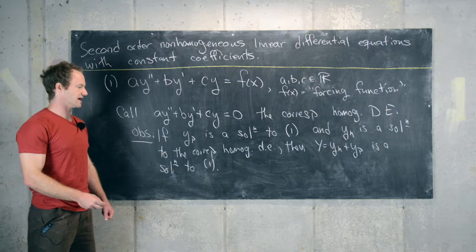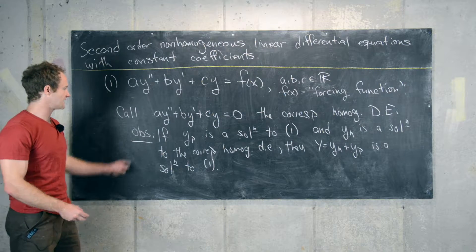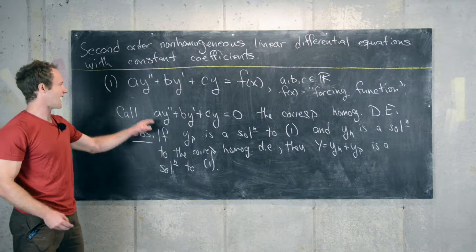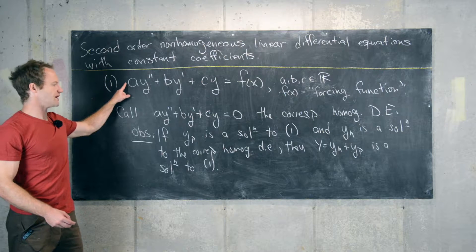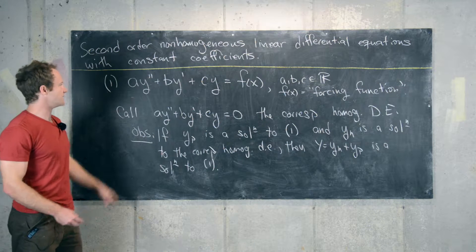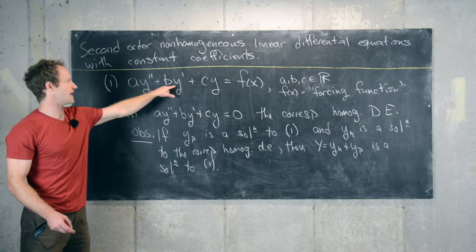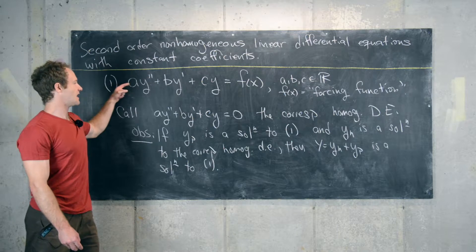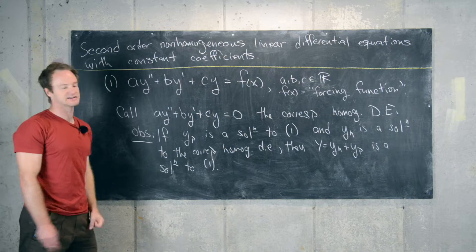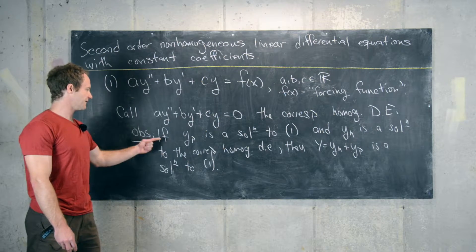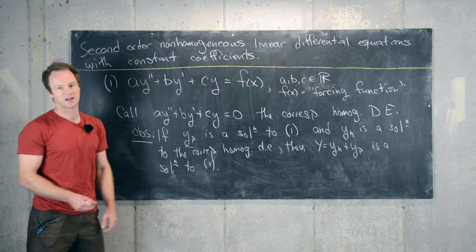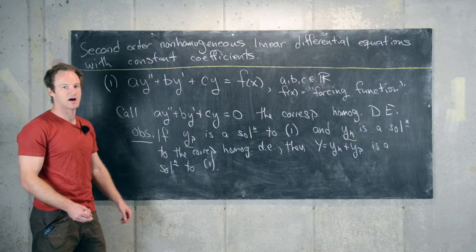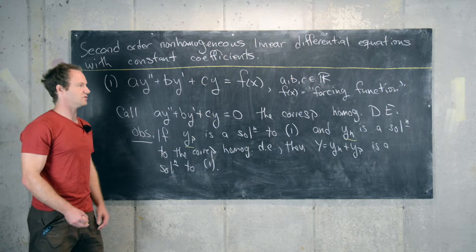We won't do the full proof, but we'll sketch it here. It has to do with the fact that plugging in a function is like some sort of linear operation. If we plug capital Y into equation one, we can split that up into yh and yp. We have a yh double prime plus b yh prime plus c yh, and we know that's zero because it's the solution to the homogeneous equation. Then we have the same thing for yp, and we know that's equal to f of x by assumption. So if we have a particular solution to the non-homogeneous equation and a homogeneous solution to the corresponding equation, their sum is also a solution to the non-homogeneous equation.